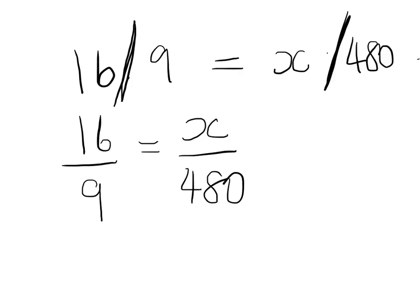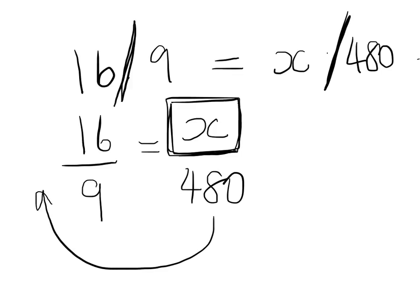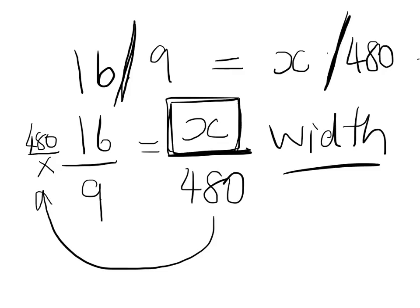Now this is where it starts to get more understandable. I need to find out what x is. The way I do that is to move 480 over to the other side — because I'm dividing on one side, I need to multiply on the other. So: x equals 480 times 16 over 9, and that is the width of my video. Using a calculator, the width is 480 times 16 divided by 9, which is approximately 853 pixels.